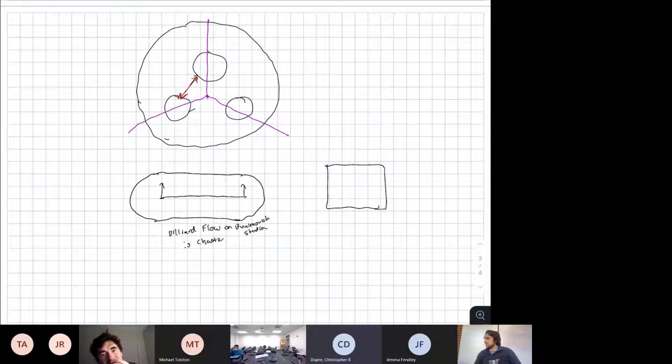The period three implies chaos thing could be helpful here. If you can look at the setup and see a cycle on the Poincaré map that recurs after three hits, wouldn't that imply the system is chaotic?